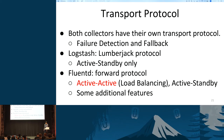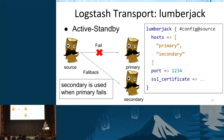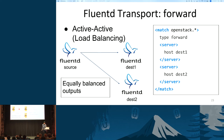Let me move on to the next topic: transport protocol. Fluentd and Logstash have their own transport protocols. Fluentd has the forward protocol and Logstash has the Lumberjack protocol, and they both support failure detection and fallback. Here is an example of active-standby configuration in Logstash. There are a primary node and a secondary node. In this configuration, the secondary node is used only when the primary node fails. On the other hand, Fluentd runs in active-active mode by default.